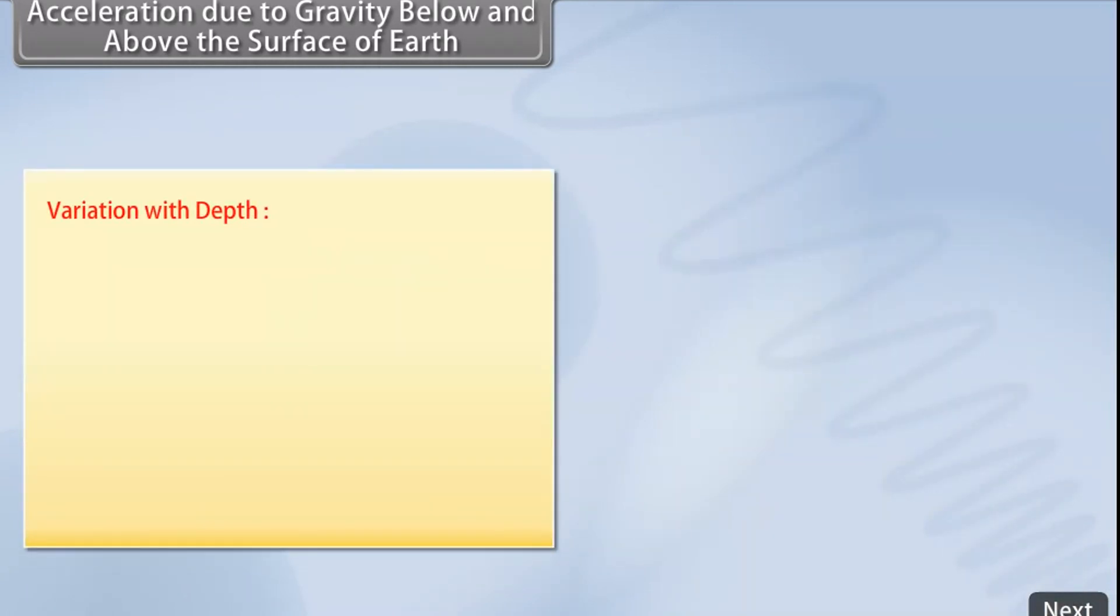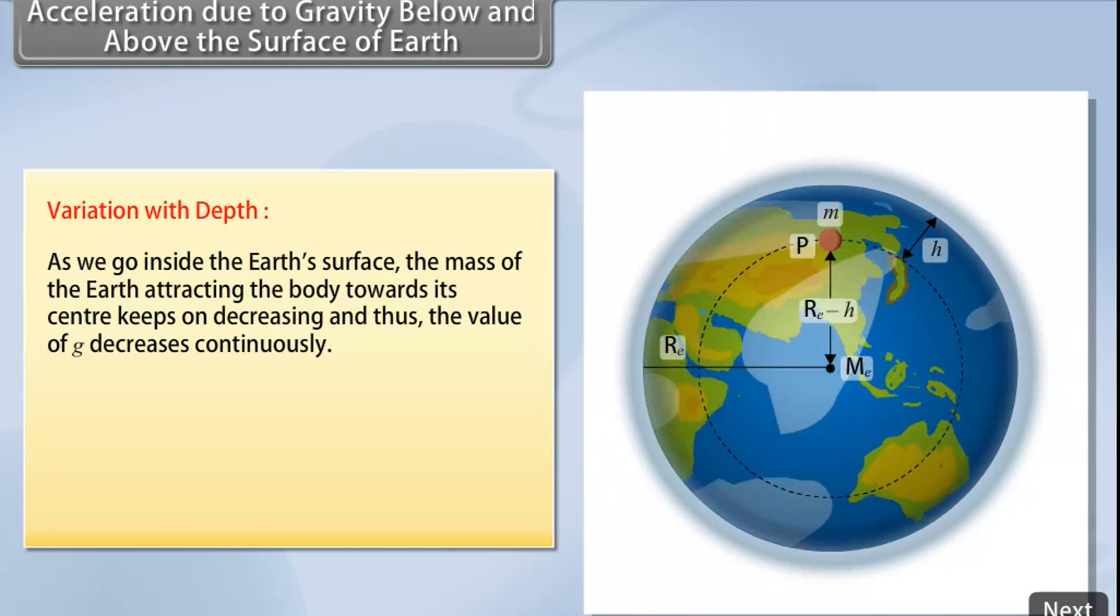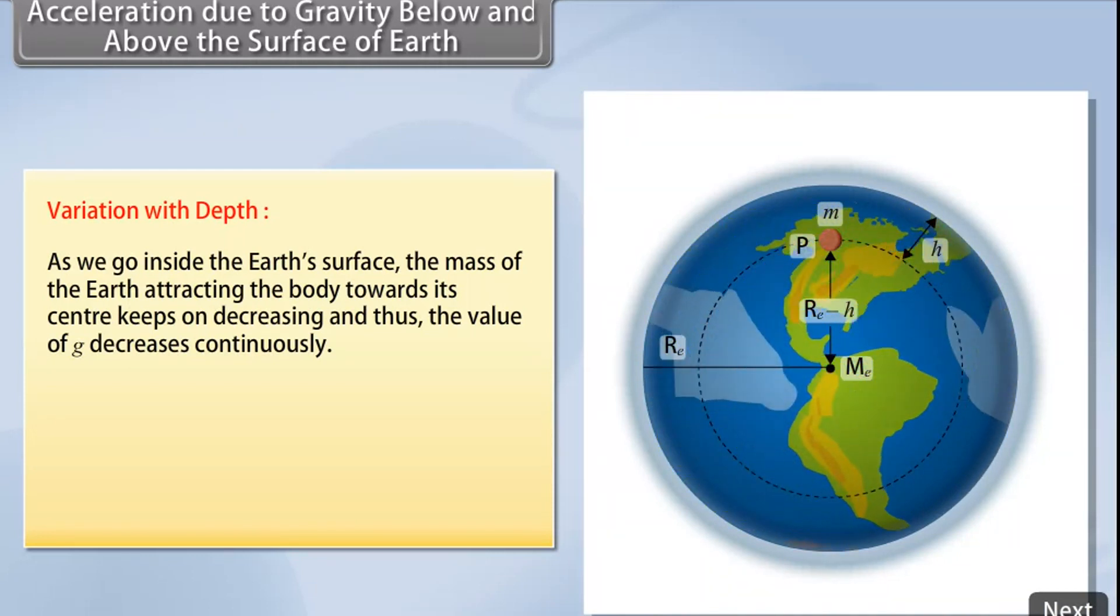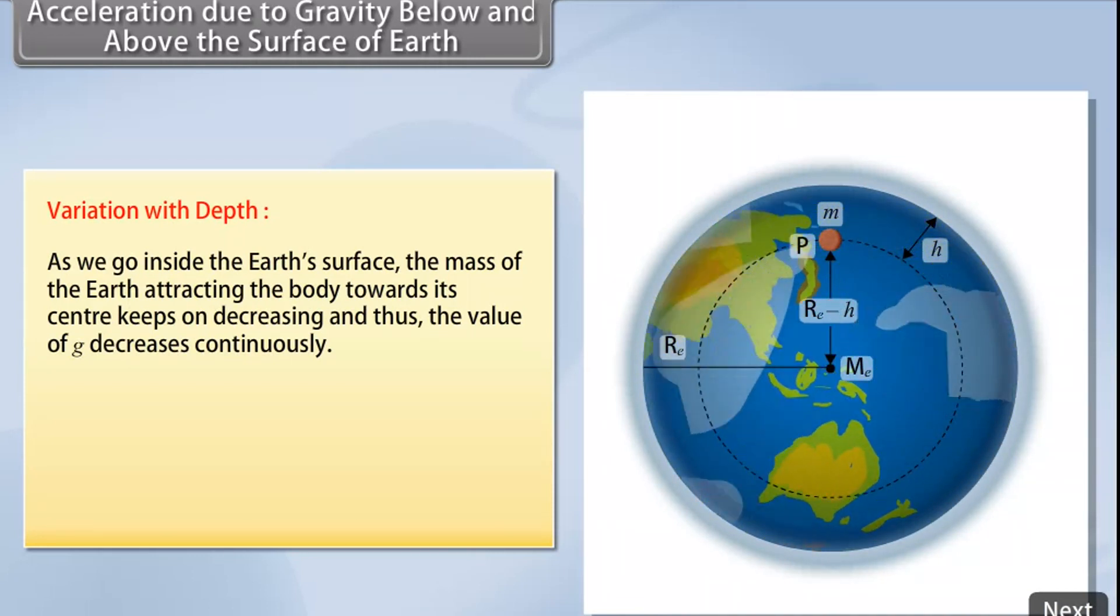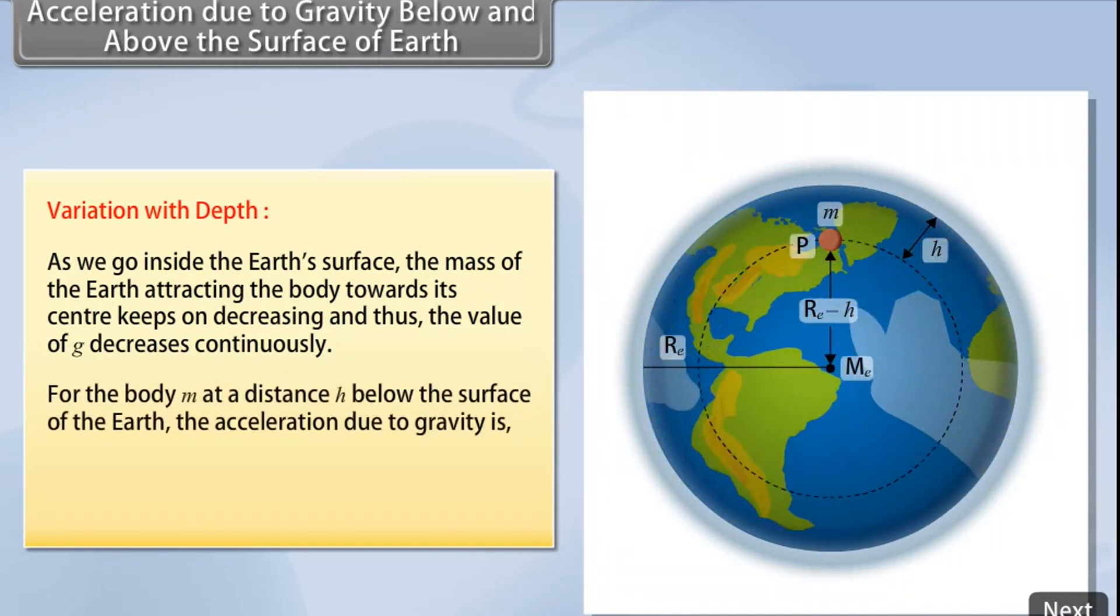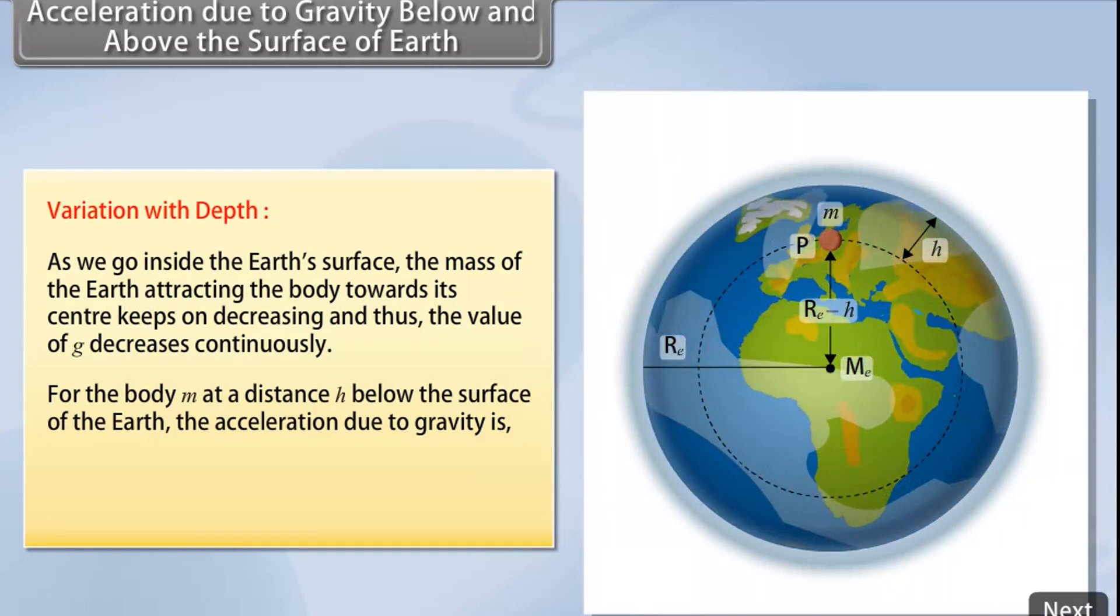Variation with depth: As we go inside the earth's surface, the mass of the earth attracting the body towards its center keeps on decreasing and thus the value of G decreases continuously. For the body M at a distance H below the surface of the earth, the acceleration due to gravity is given by G prime.